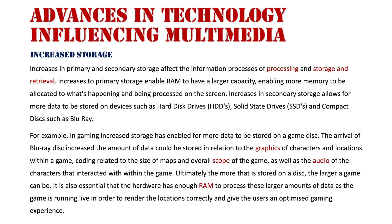This affects the information processes of processing, storing, and retrieval. Increases in primary storage enable RAM to have a larger capacity, enabling more memory to be allocated to what's being processed on screen. When you're using your system and interacting with it, everything on screen that you're interacting with is in RAM at that point — it's in live memory, which is primary storage.